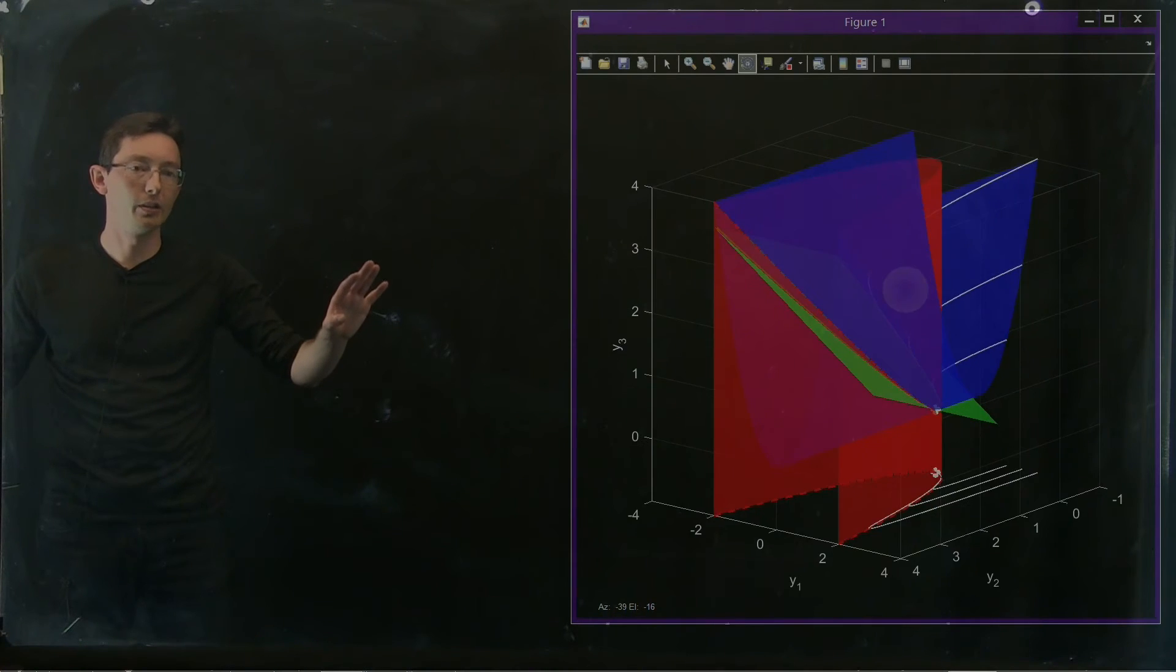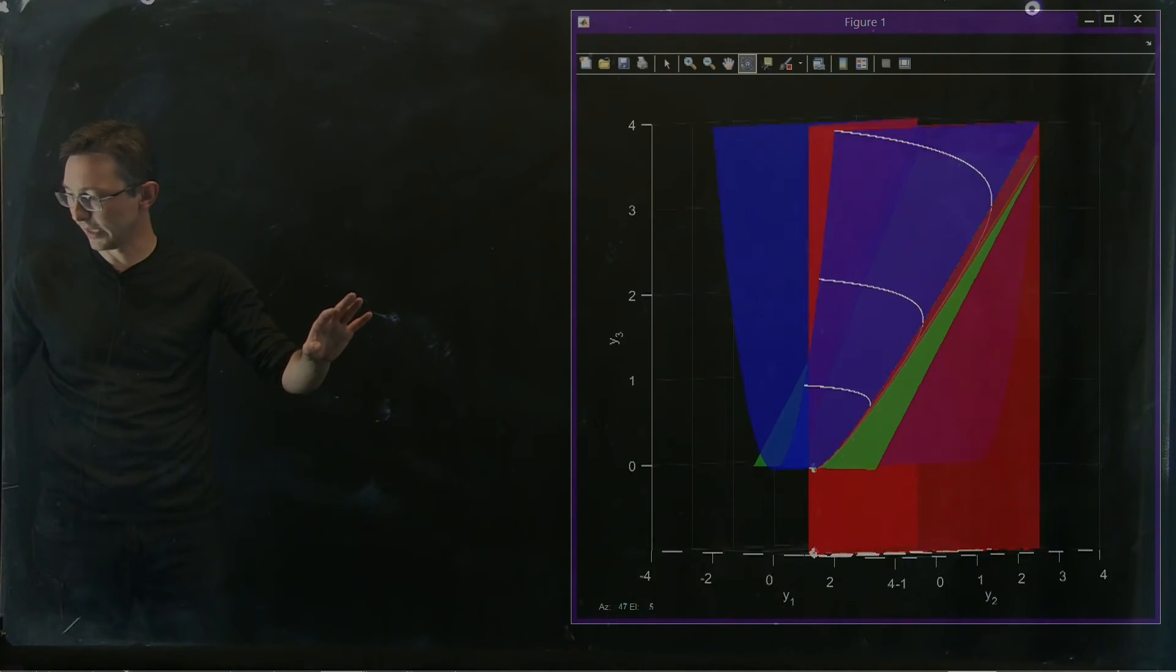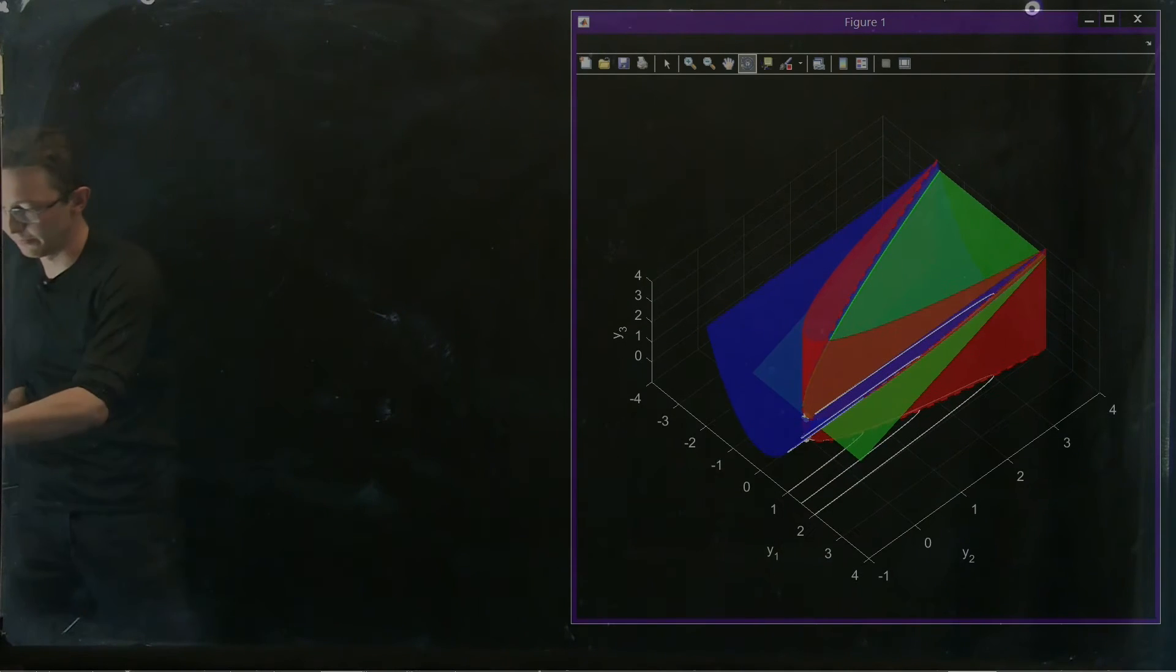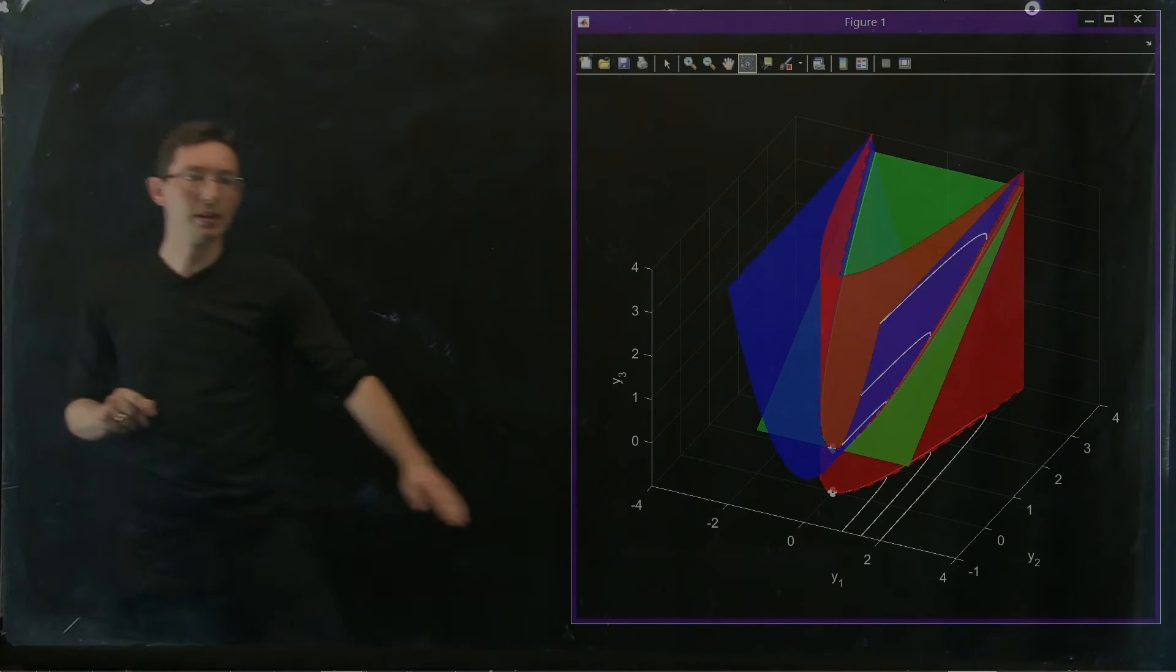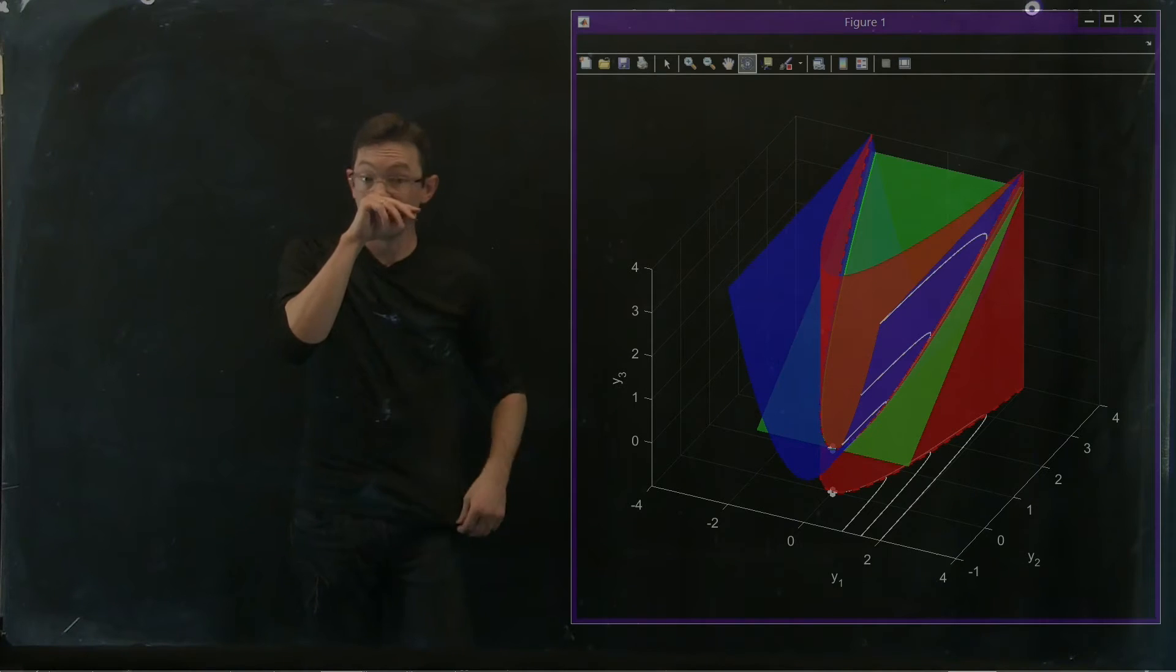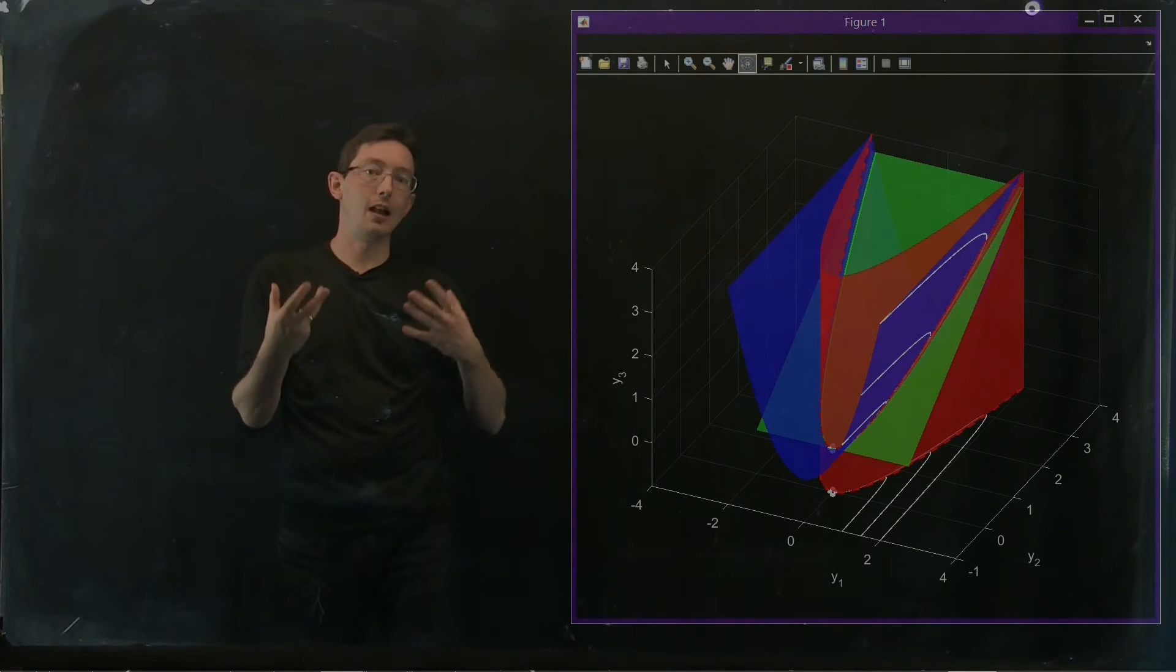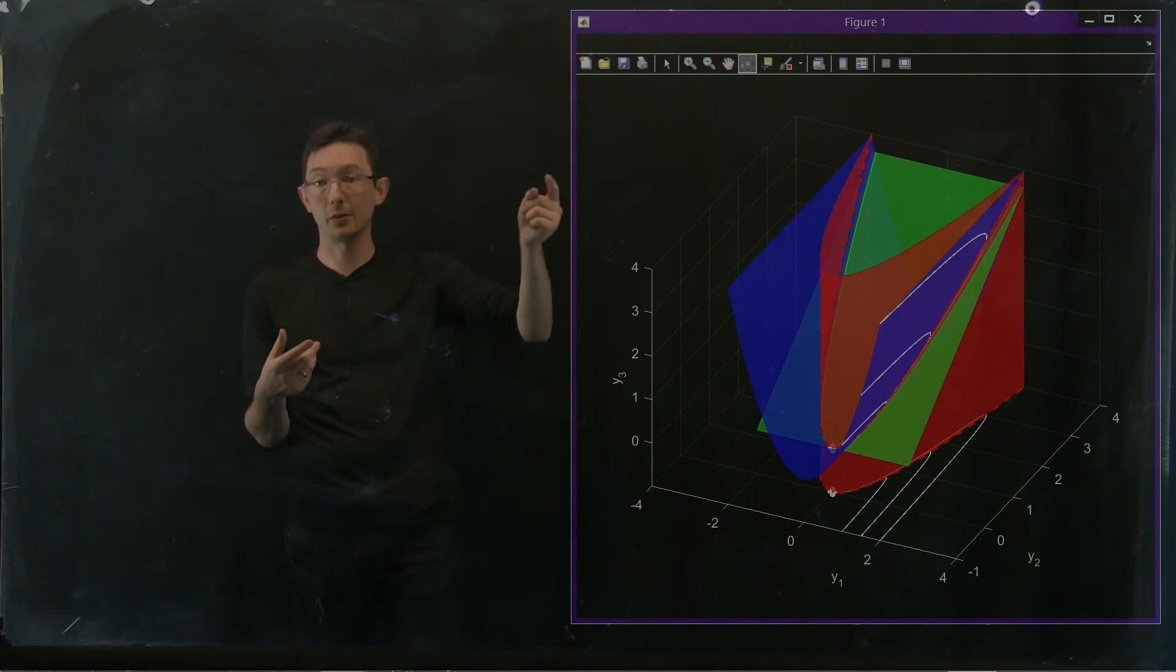So I want to tell you a little bit about these coordinate systems and why we've chosen them and what they mean. Here we have y1 and y2, and those are just my x1 and x2 directions. And then y3, this third dimension, is a measurement of x1 squared.